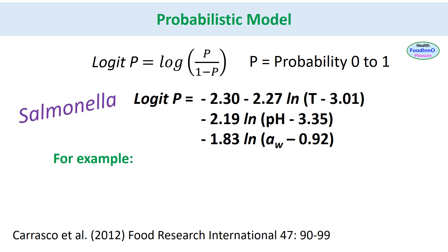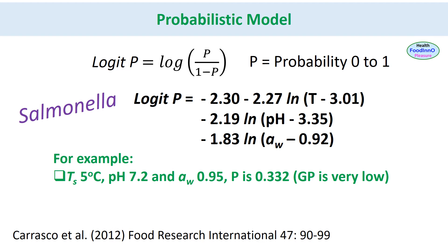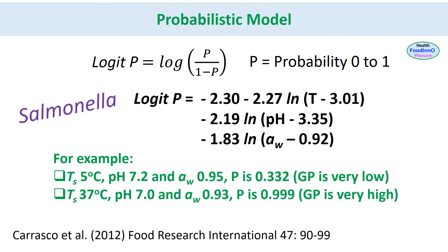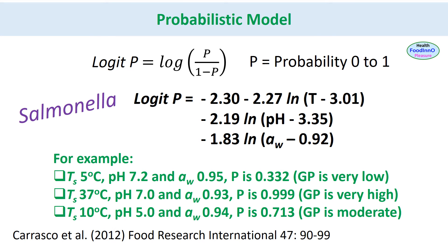Using these equations, we can find the probability of growth at any conditions. For example, at a storage temperature of 5°C, pH 7.2, and Aw 0.95, the probability p is 0.332 — growth probability is very low. At 37°C, pH 7.0, and Aw 0.93, probability p is 0.999 — growth probability is high. At 10°C, pH 5.0, and Aw 0.94, probability p is 0.713 — growth probability is moderate. P can be developed with hurdles, with or without time as a function. However, probability does not indicate what the growth rate would be.